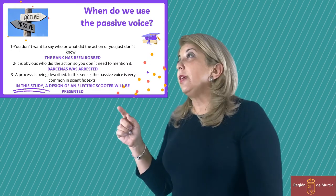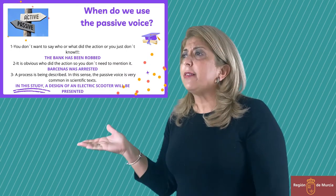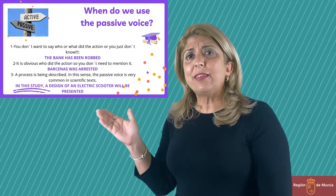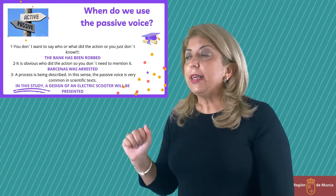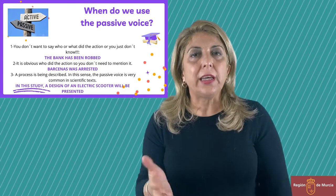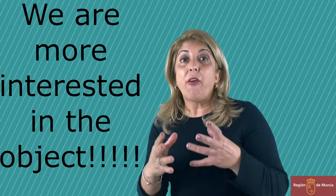The third use is when a process is being described. In this sense, passive voice is highly used in scientific texts. For example, in this study, an electric scooter will be presented. In a nutshell, we use the passive voice when we are more interested in the object rather than the subject itself. So there is a change in the focus of the sentence and a change in the emphasis too.